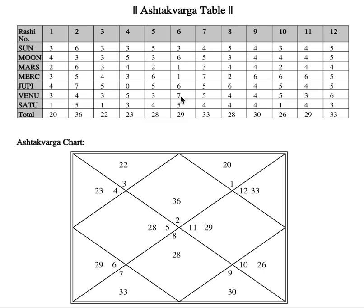Venus as Lagnesh contributing to the fifth house means the person is very much interested in having children. Moon is the third lord, so the person will like to travel. Lagnesh contributing to the fifth house can show you like yourself very much — obsessed with yourself, proud, puffed up. But here Saturn is the king-maker because his total points are very less, yet he has five points — so the ninth and tenth lord is prominent. He loves his reputation and loves to listen to the Guru.